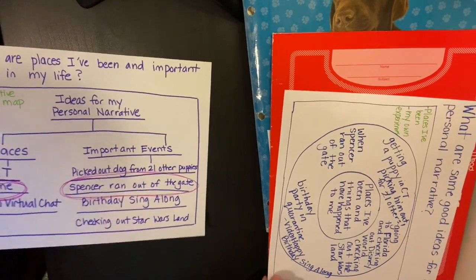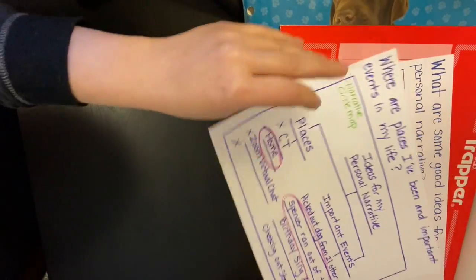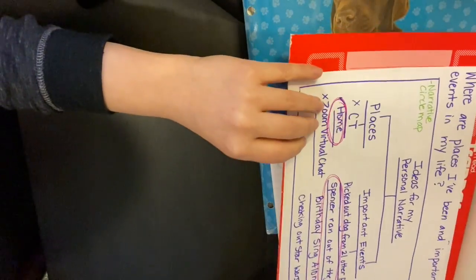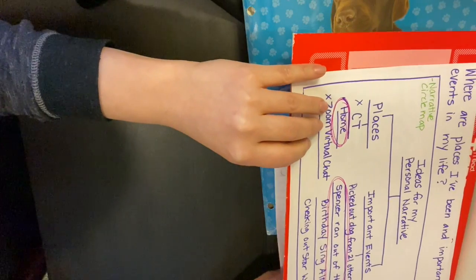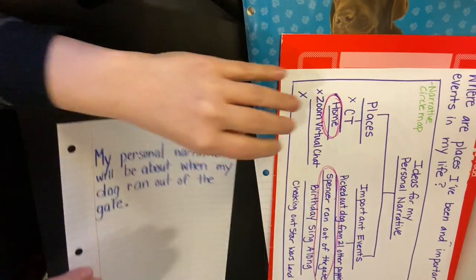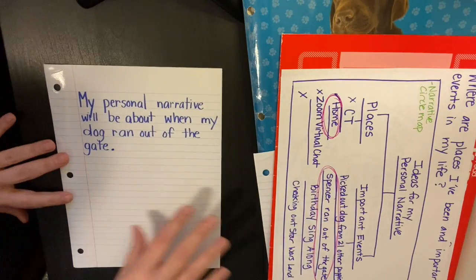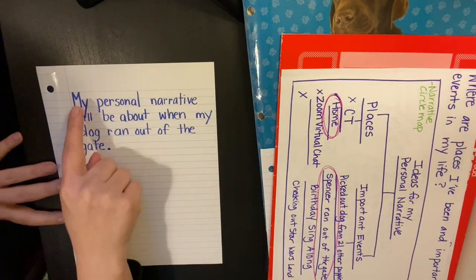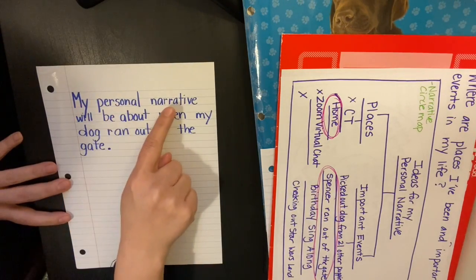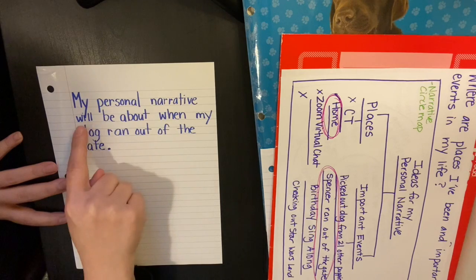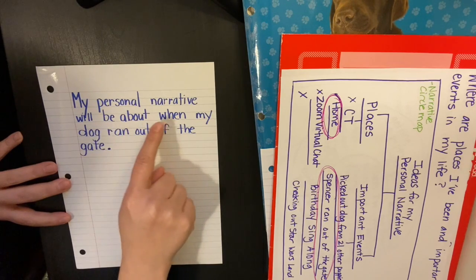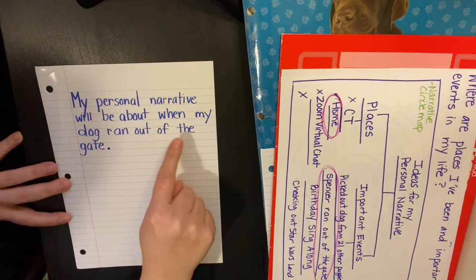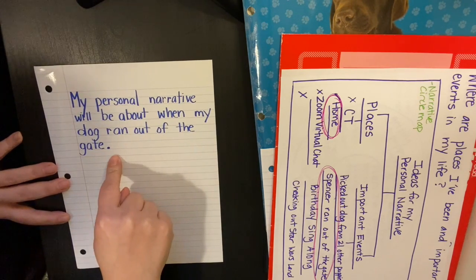What we needed to do was tell our teachers what our story choice was, and we wrote that in a complete sentence: "My personal narrative will be about when my dog ran out of the gate."